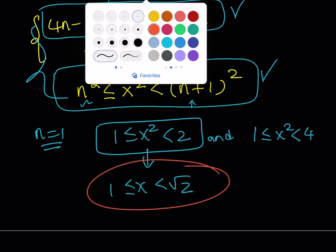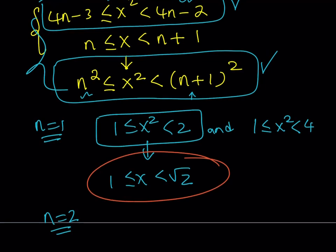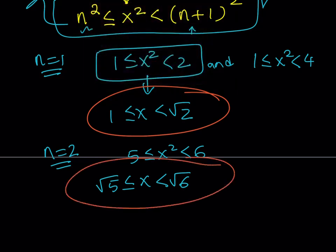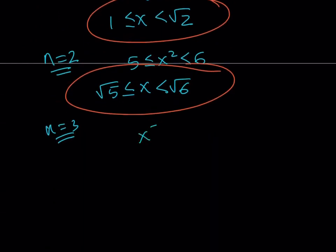Now n equals 2: 4 times 2 is 8 minus 3 is 5, so x squared is going to be between 5 and 6. Since x is positive, x needs to be between root 5 and root 6 — this interval is half closed, so x ∈ [√5, √6). For n equals 3, 4 times 3 minus 3 is 9, so x squared is between 9 and 10 — half closed again. Taking square roots with x positive, x needs to be between 3 and root 10: x ∈ [3, √10).